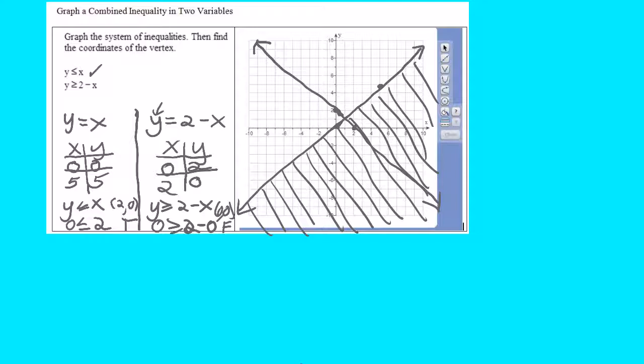So if 0, 0 gives me a false for this line right here, that means I'll shade over here.